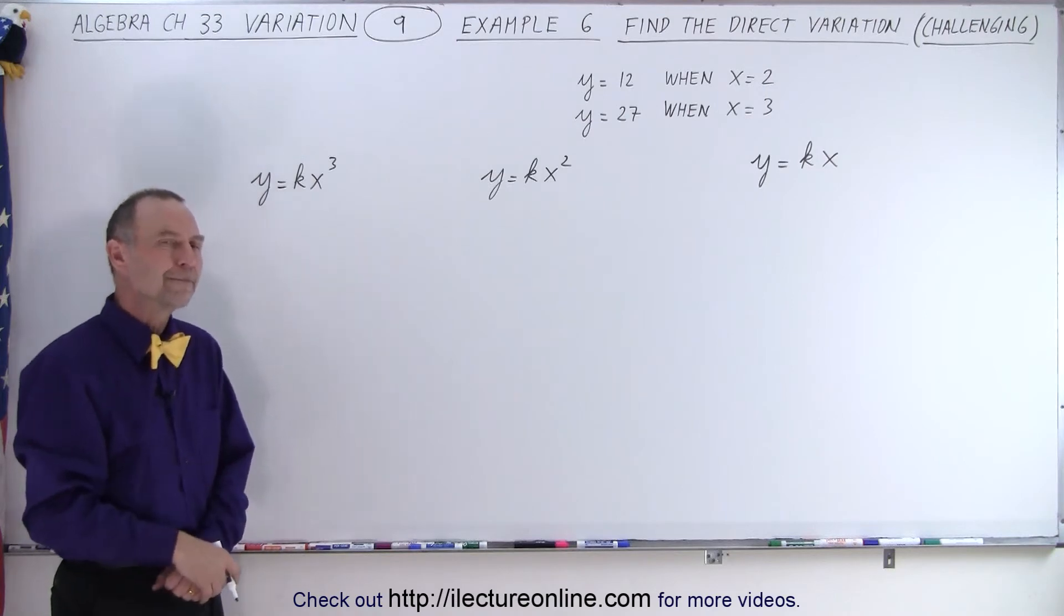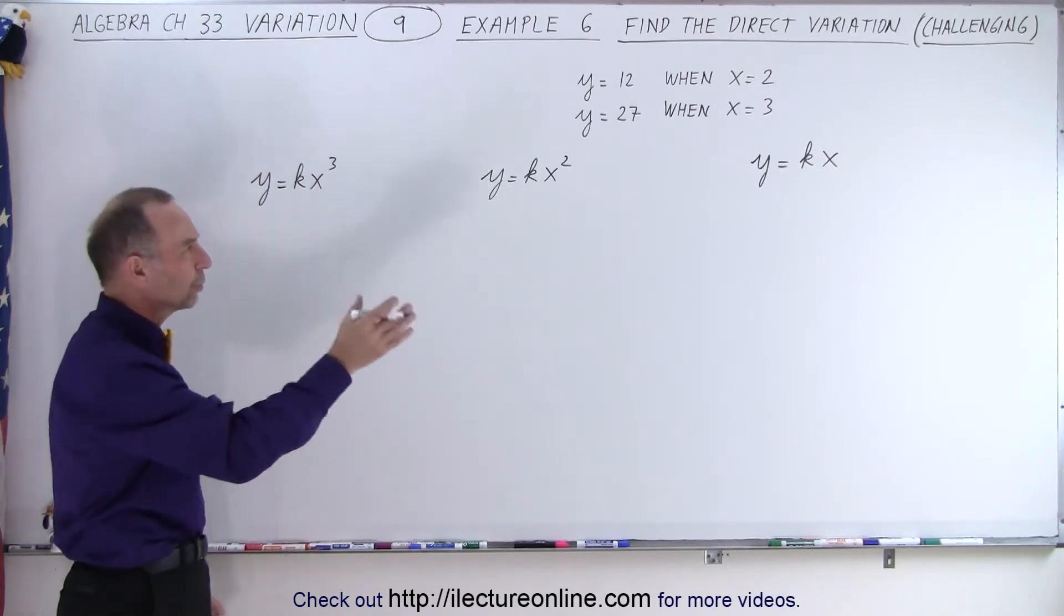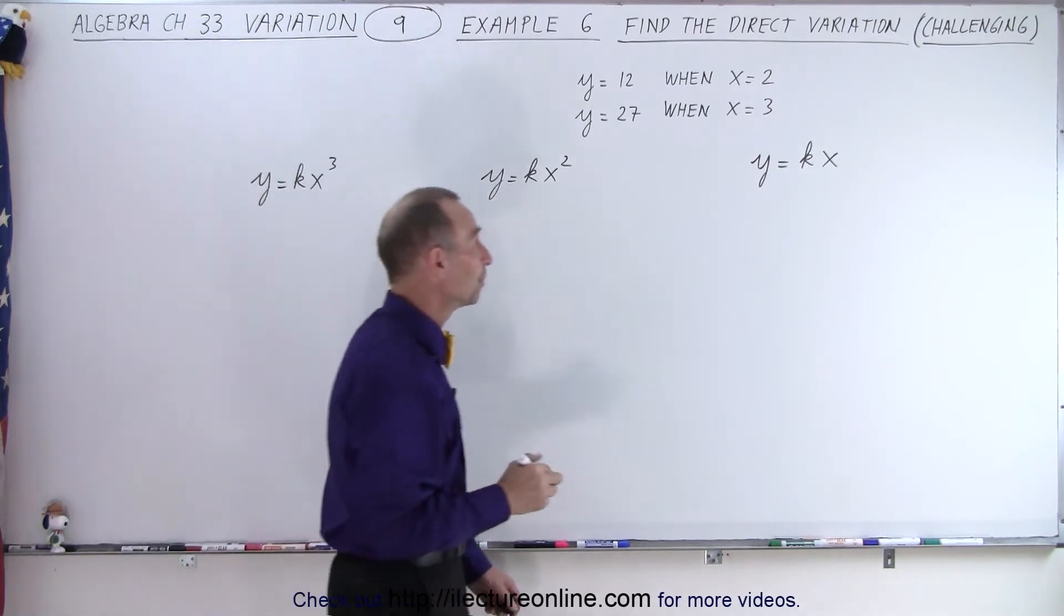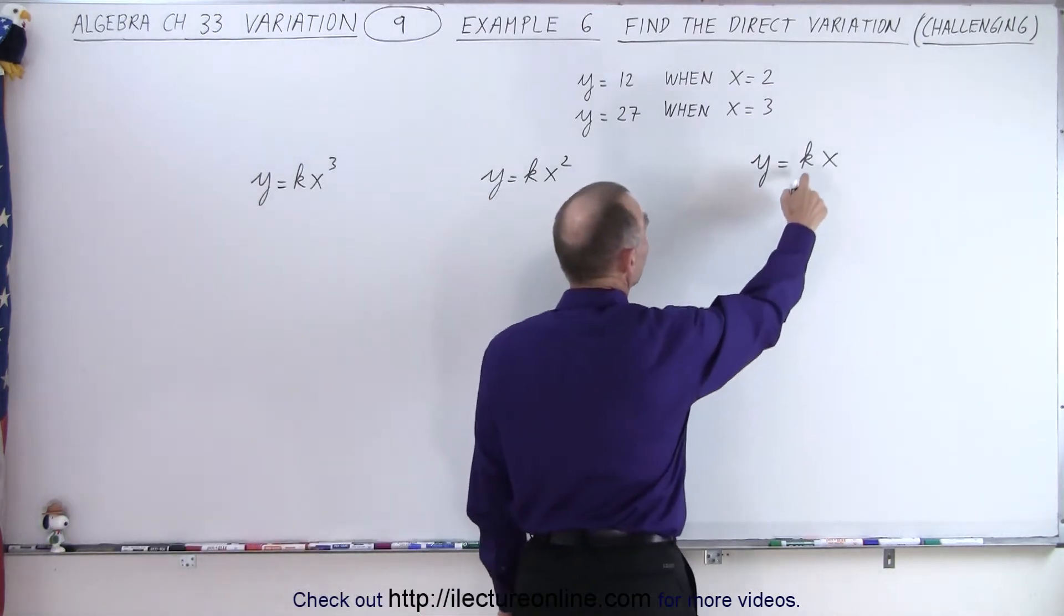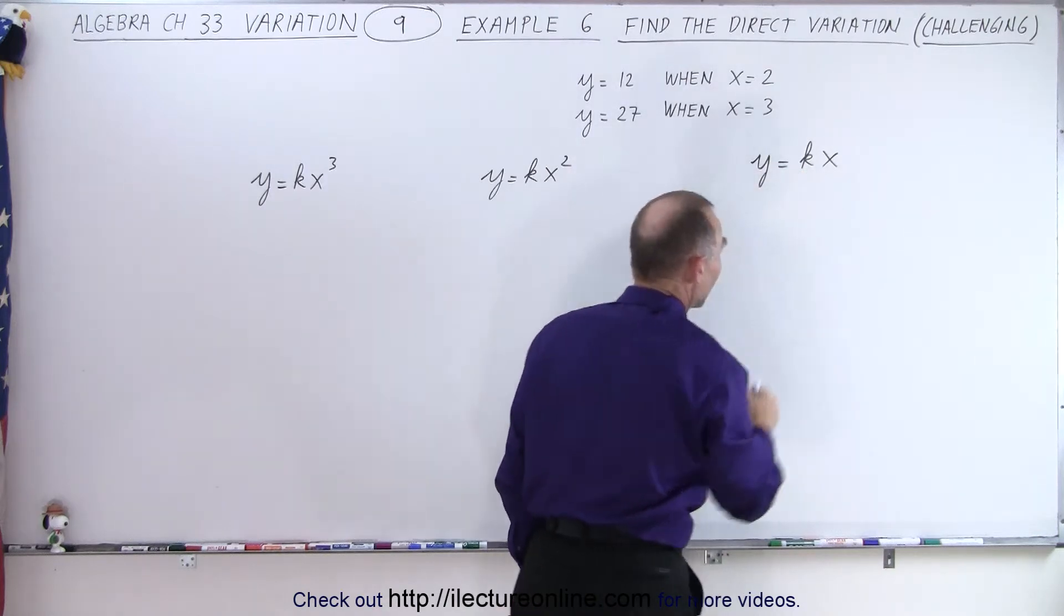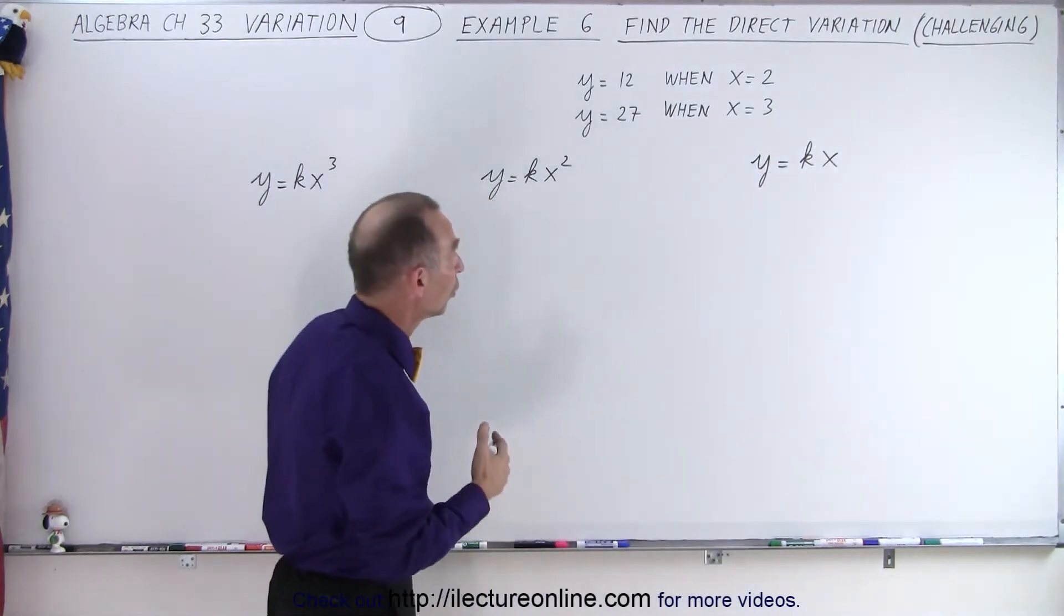We only know that there's direct variation, so x needs to be in the numerator, but it could be x to the first, x to the second, x cubed. Well, which one would it be? So what we're going to do here is we go down the list. We'll start with the first one and see how we would solve the problem.